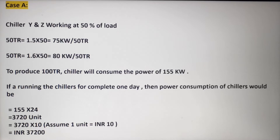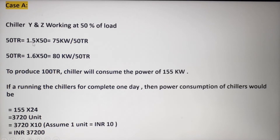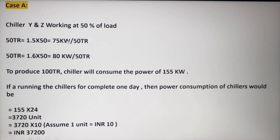In Case A, chillers Y and Z are each running at 50% load. Since each chiller's rated capacity is 100 TR, each one is handling 50 TR. Chiller Y consumes 1.5 kW per TR, so 1.5 × 50 = 75 kW to produce 50 TR of cooling. Chiller Z consumes 1.6 kW per TR, so 1.6 × 50 = 80 kW to produce 50 TR of cooling.